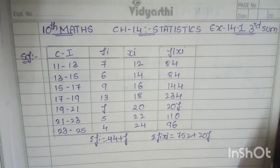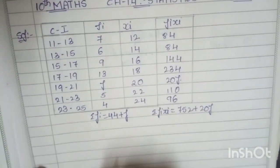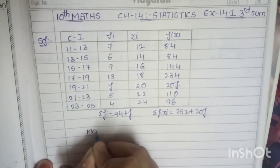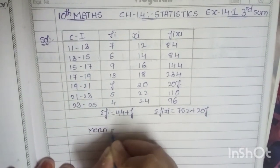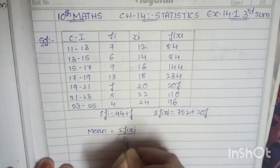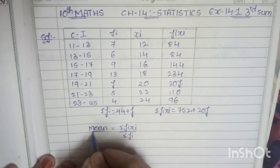Now we are doing this sum using the direct mean method. So we have to substitute all these values into that formula. The direct mean method formula is mean equals sigma fi xi by sigma fi.